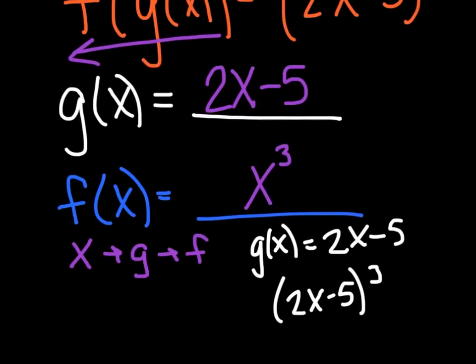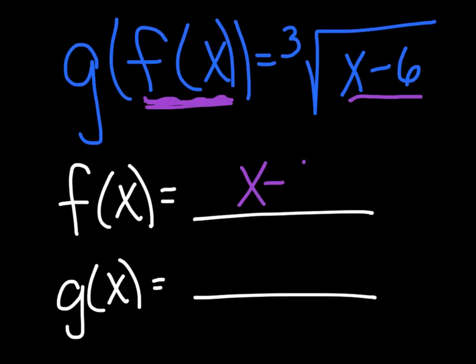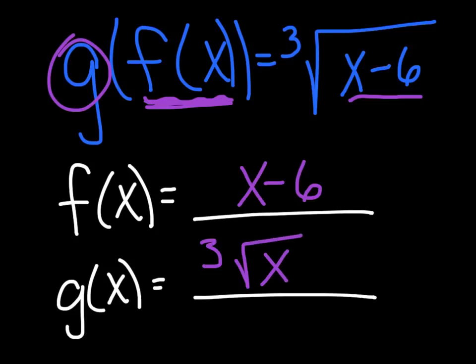One more example: g of f of x = ∛(x − 6). Can you tell me who the inner function is and who the outer function is? f of x is the inner function because it's inside the g of x. Looking here, x − 6 is inside the cubed root. So the inner function f of x = x − 6, and the outer function g of x = ∛x. You can always check by finding x into f into g. And that does it for tonight on composition of functions — we look forward to seeing you tomorrow.